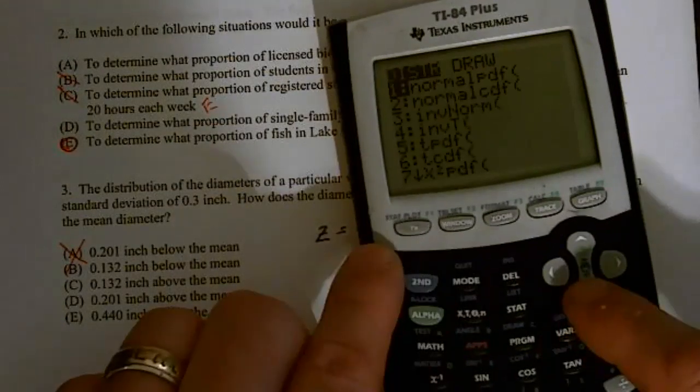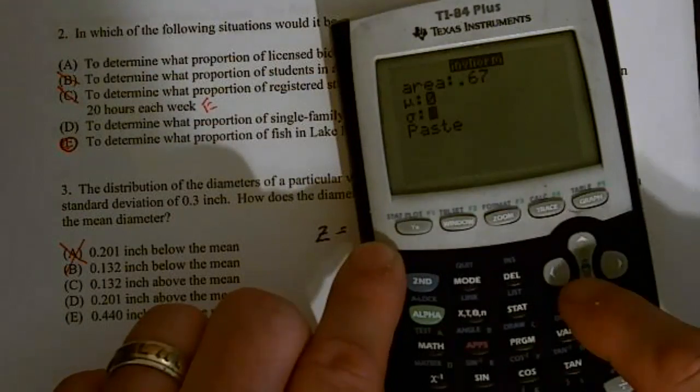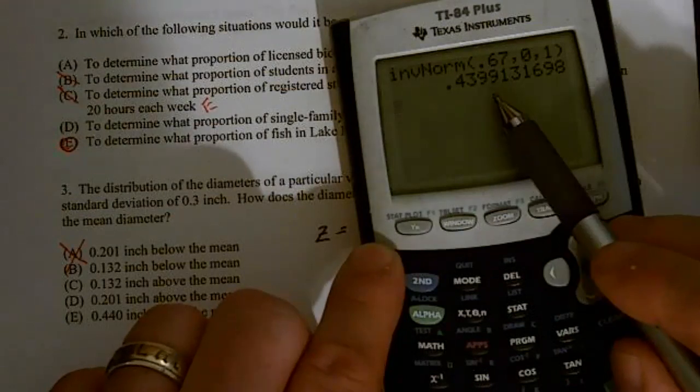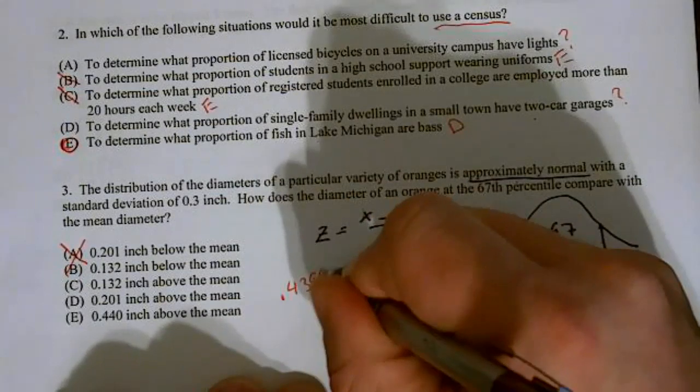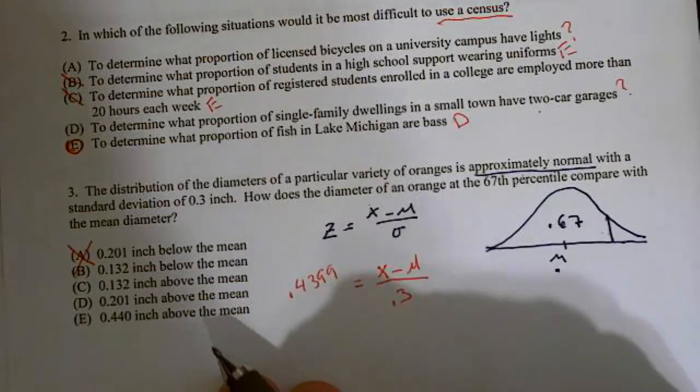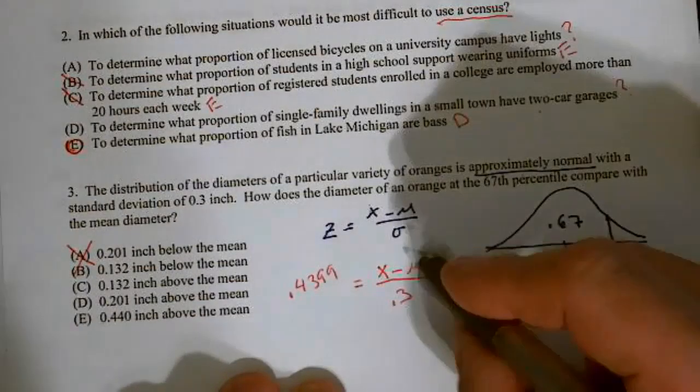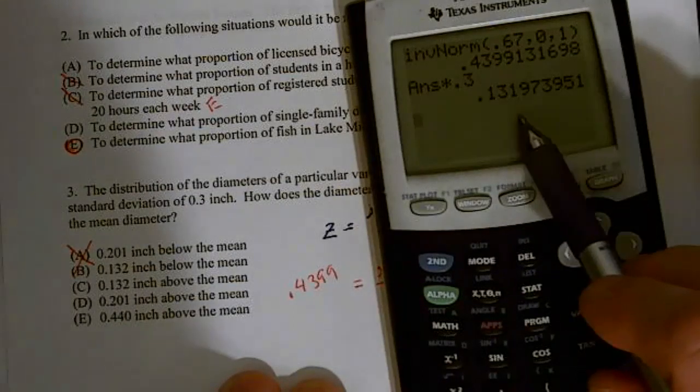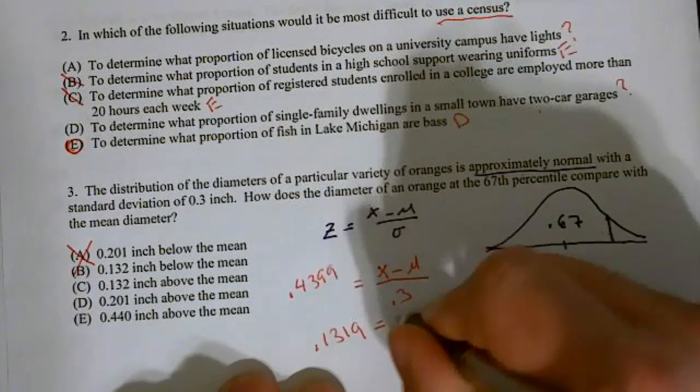So second quit, second vars, inverse norm, 0.67, mean of 0, standard deviation of 1, because I'm just looking for a z-score, and all z-scores are 0, 1. And I end up getting 0.4399. So the nice thing is we have our z-score, and they're tricky. They already put this value in there, but we need to solve for this difference. So when I multiply both sides by 0.3, I end up getting 0.1319.